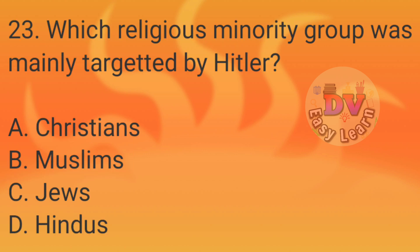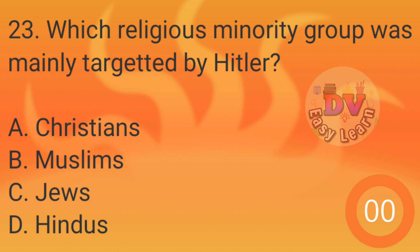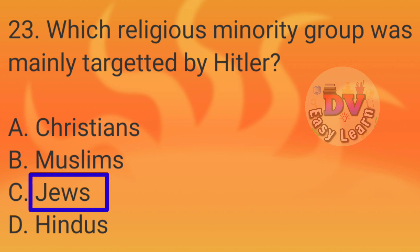Question number 23: Which religious minority group was mainly targeted by Hitler? Correct answer: Jews.